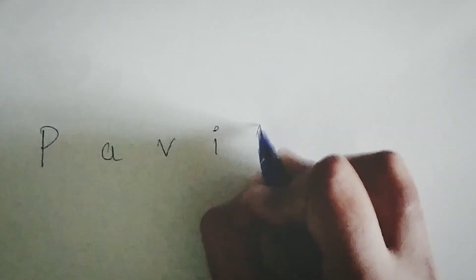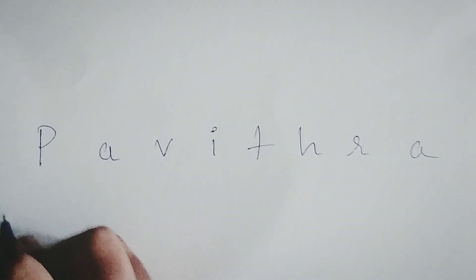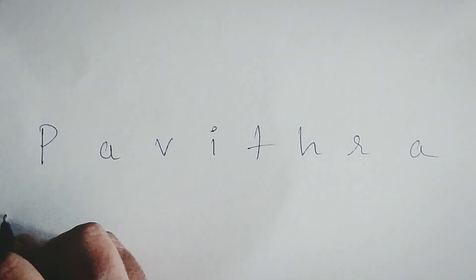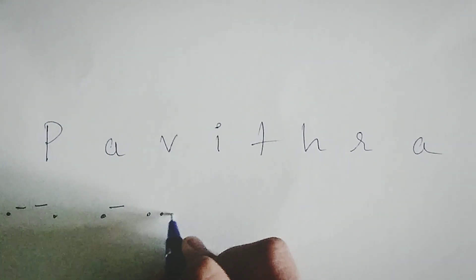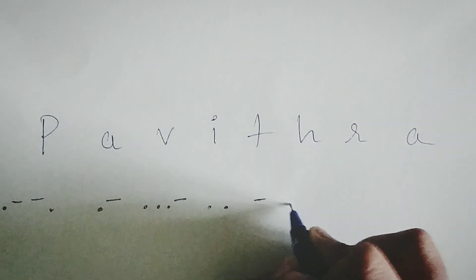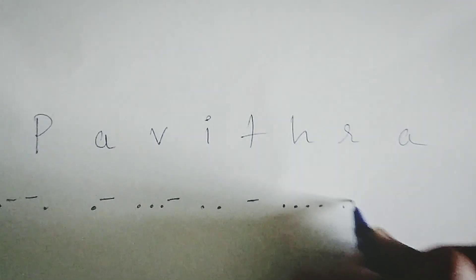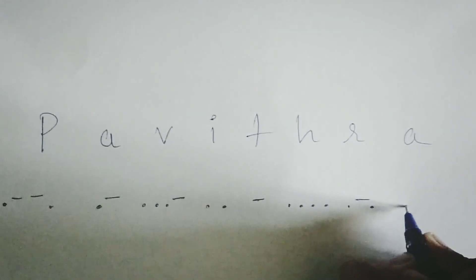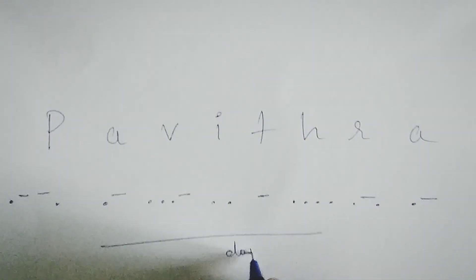Now let me try to write my name in Morse code. P — my poor puppy's tie. A — The Avengers. V — I like this video. I — I bid. T — tornado. H — hey, how are you? R — she is rocking it. A — The Avengers. It's done! Now even you can write your name in Morse code.